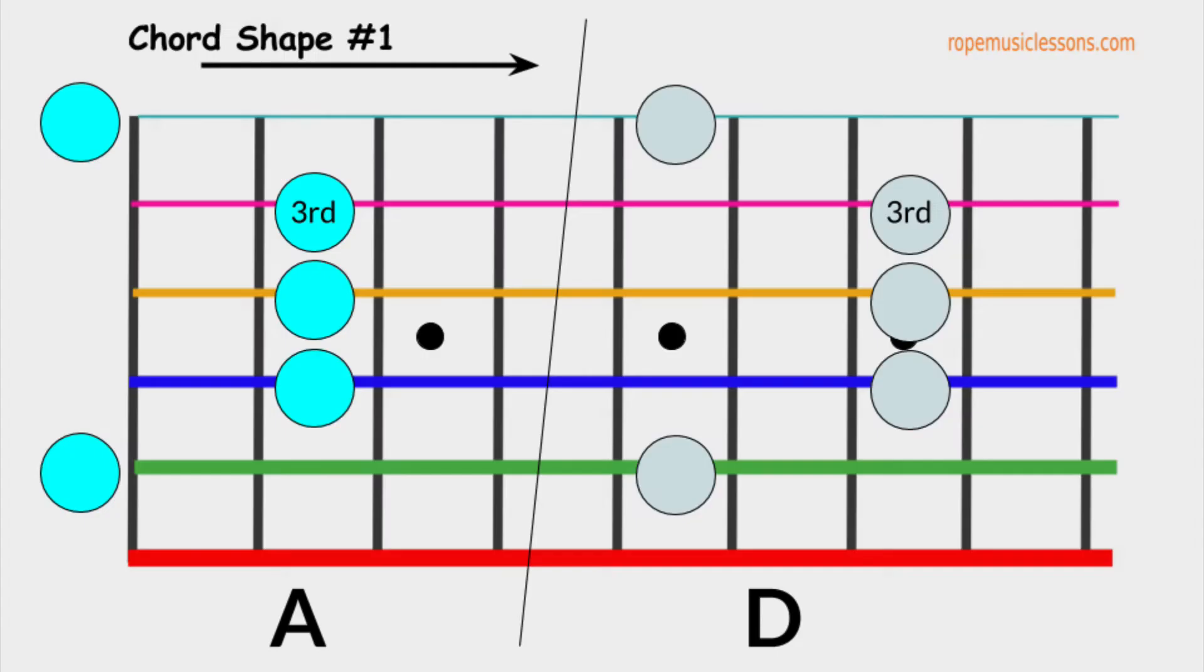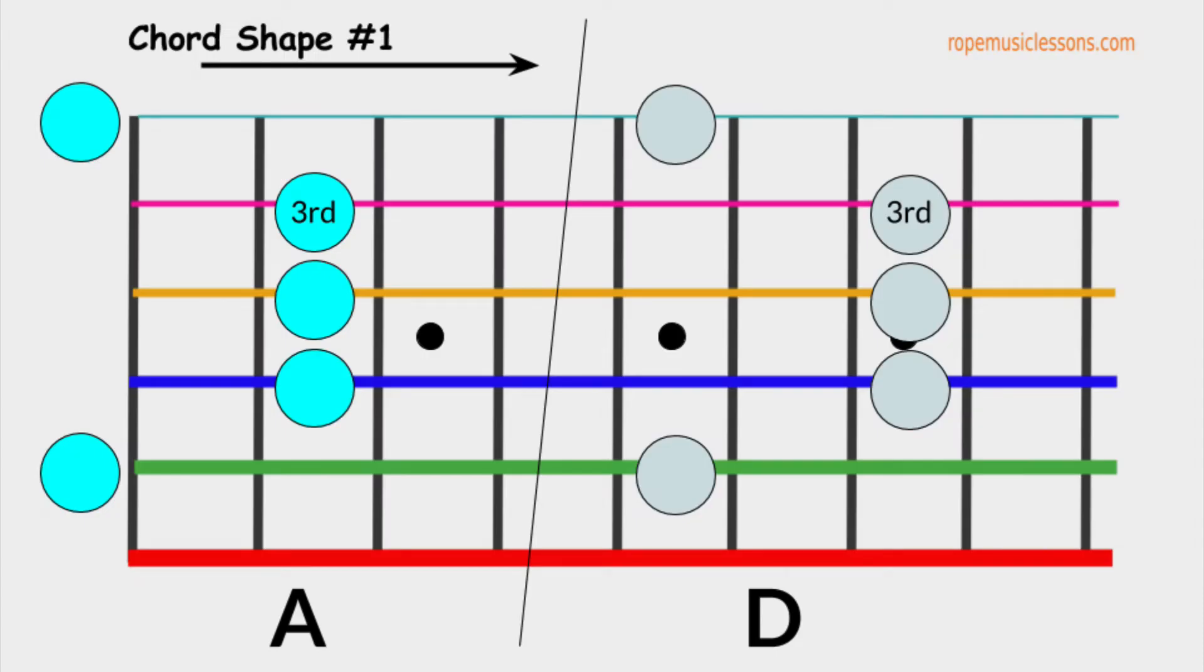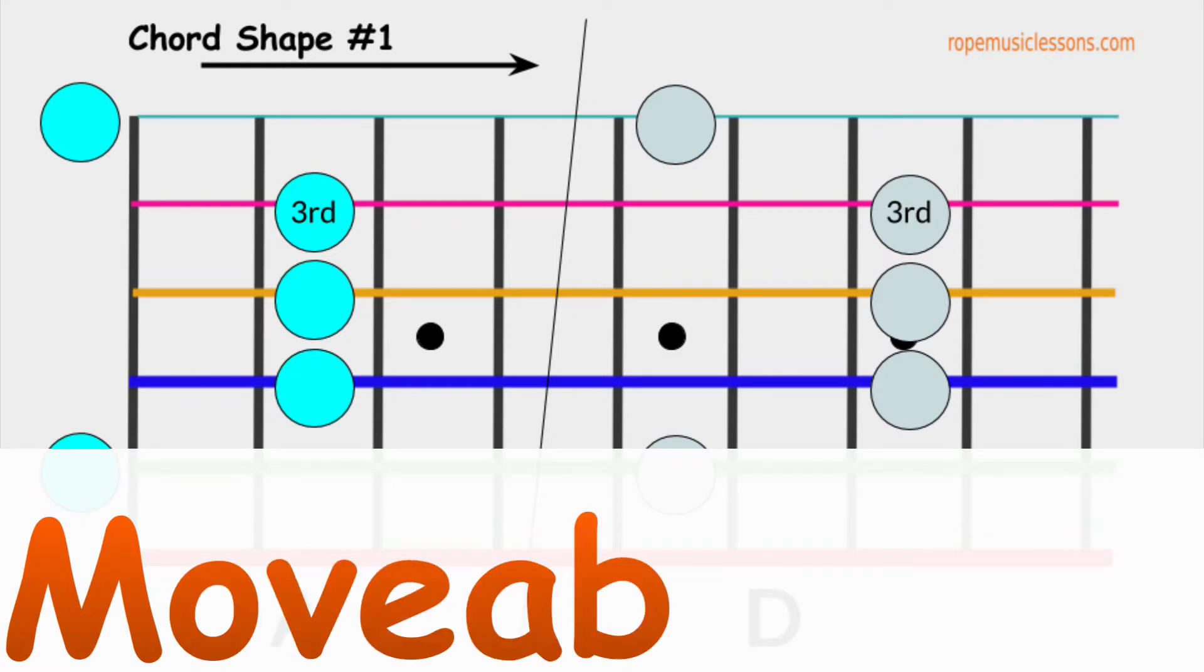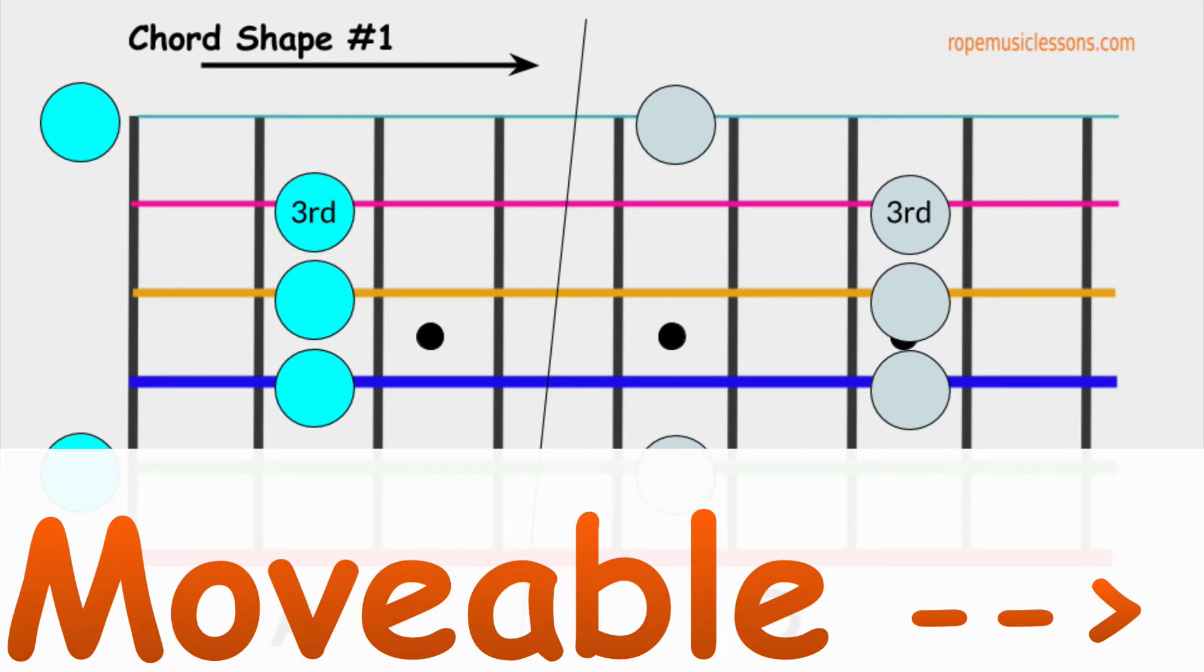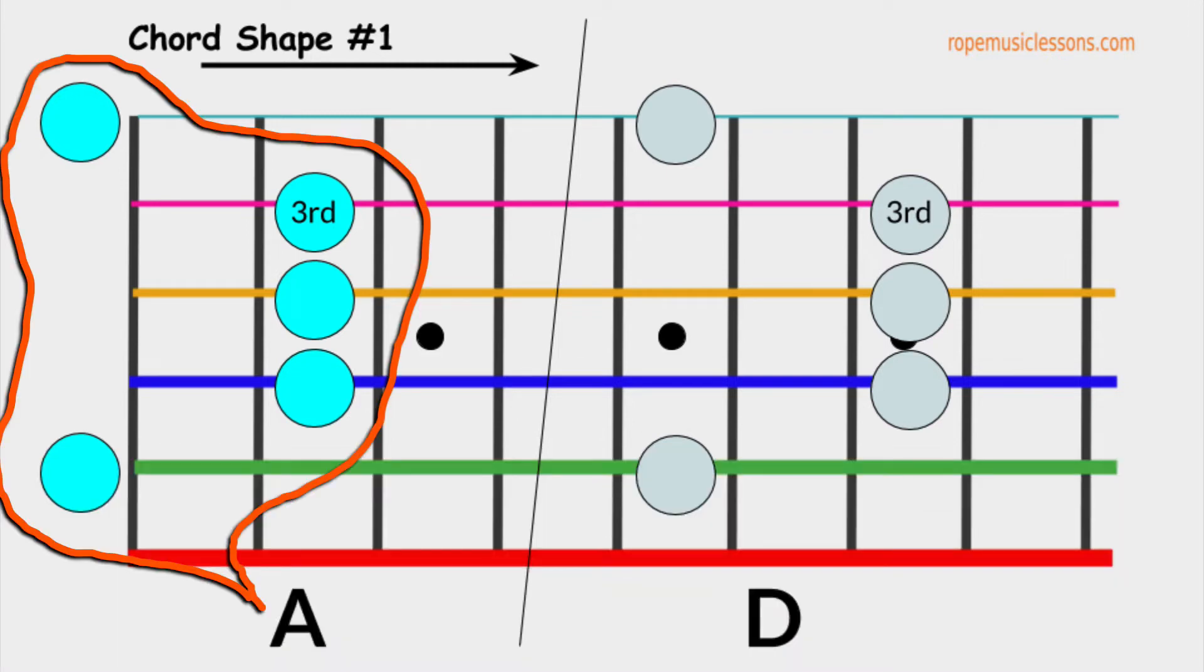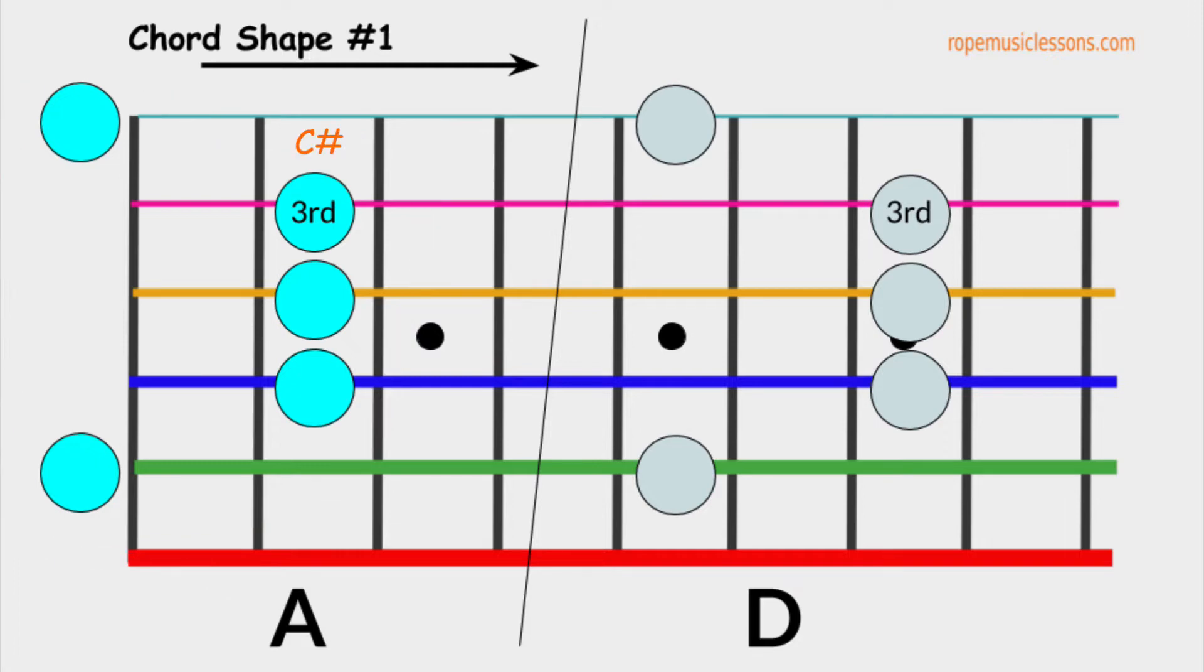Let's start with chord shape number one. By the way, all of these chord shapes that I am showing you are all movable, meaning you can have the same shape and move it around the whole fretboard. This is A major. You will notice that I indicated third. That means it is the third of A major which is the note C sharp.